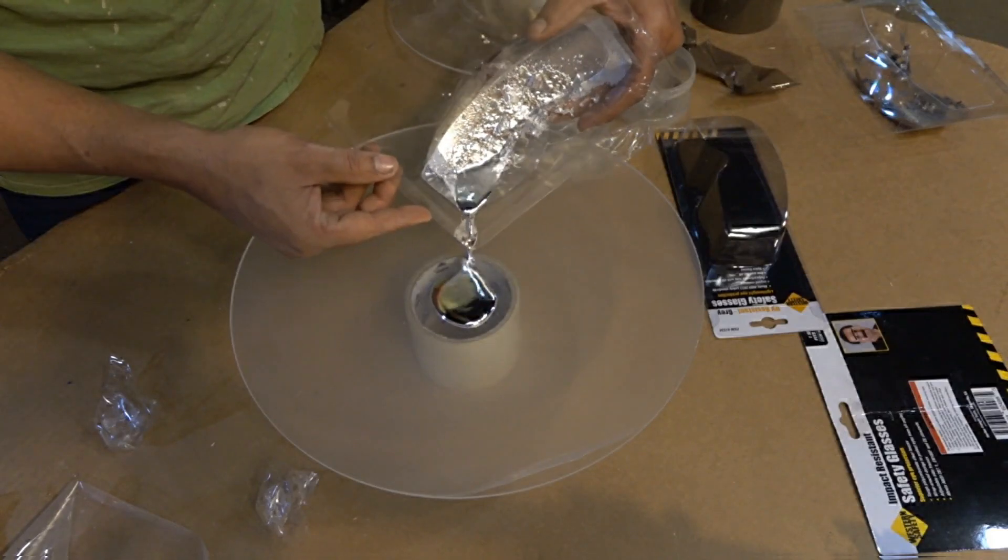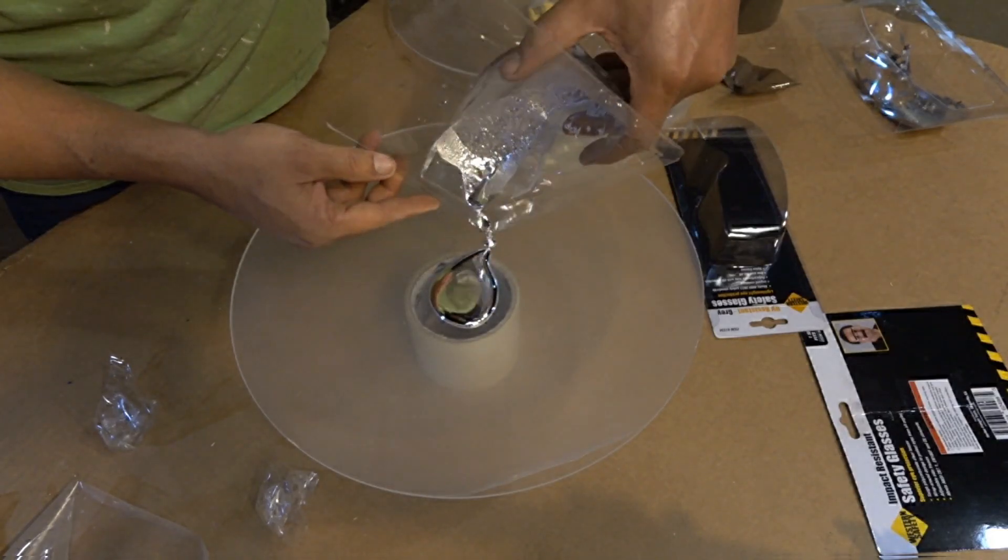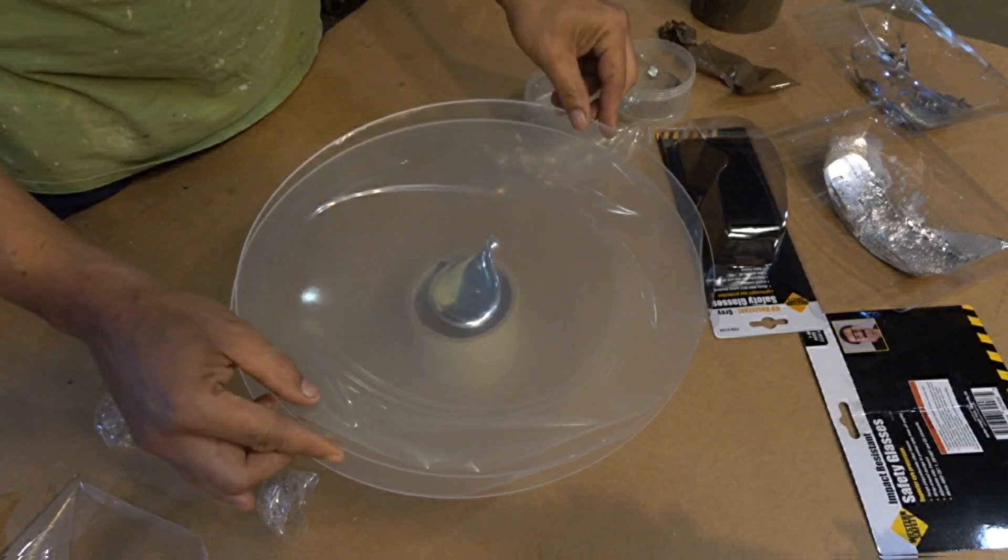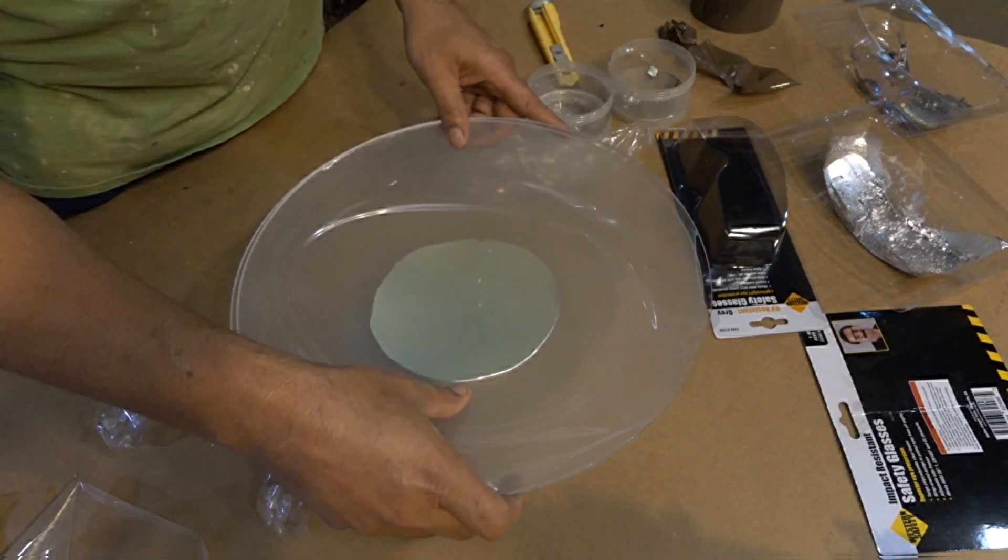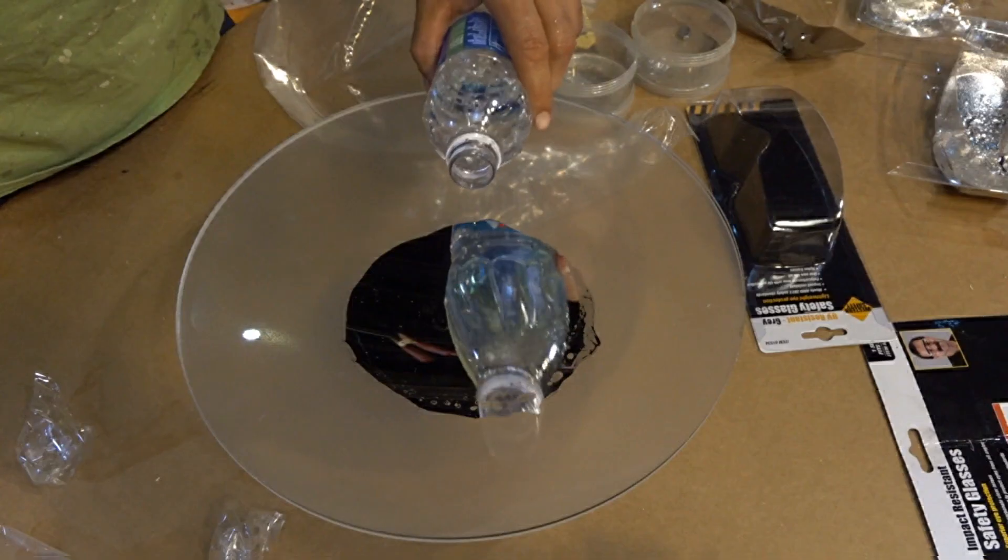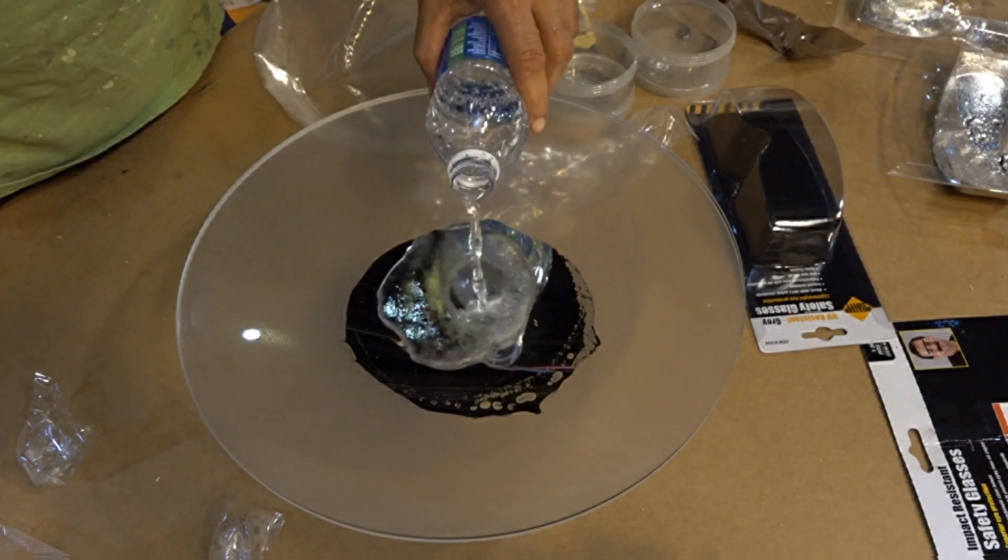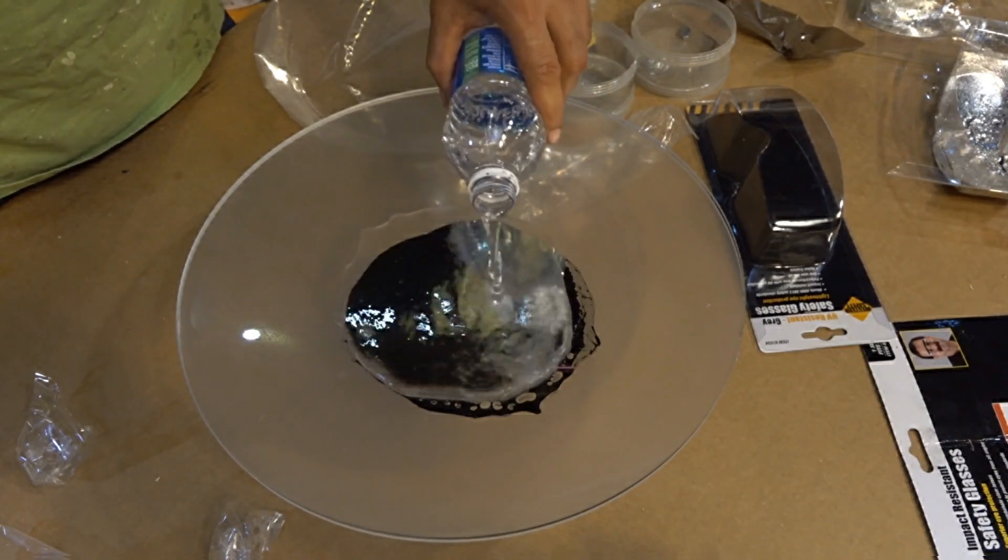After remelting the gallium and pouring it into a parabolic base mold, an additional extremely smooth acrylic parabolic shape was pressed into place. I also poured water on top of the outer part of the mold to act as a weight and speed up the cooling process.